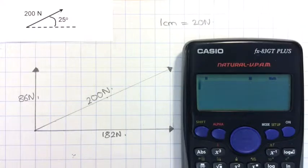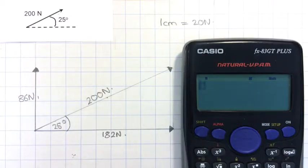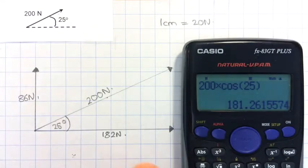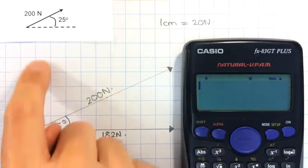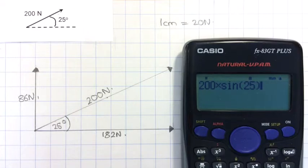For interest, I could check how well I've done with my scale drawing by using some trigonometry. So if this was 25 degrees, I could also work out this length as being 200 times cos 25 degrees, which gives 181 newtons—so not too bad to get 182. And this one should be 200 times sin 25 degrees, and that gives 85 newtons to two significant figures. I've got 86. Again, not too bad.